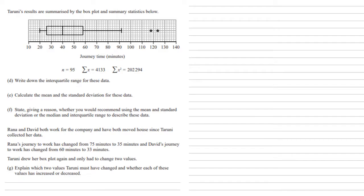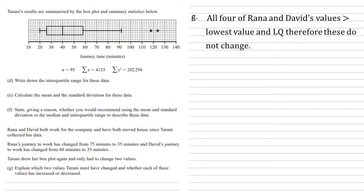We've got the same box plots and summary statistics, but now Rana and David, both working for the company, have both moved house since Taruni collected her data. Rana's journey to work has changed from 75 minutes to 35 minutes, and David's journey to work has changed from 60 minutes to 33 minutes. Taruni drew her box plot again and only had to change two values. We need to explain which two values she's changed and whether they have increased or decreased. All four of those values—75, 35, 60, and 33—are larger than the lowest value and the lower quartile, so they have no effect on those two values. They don't change. Again, the outliers are way up there. Rana's and David's values aren't the outliers, so they're going to stay the same.